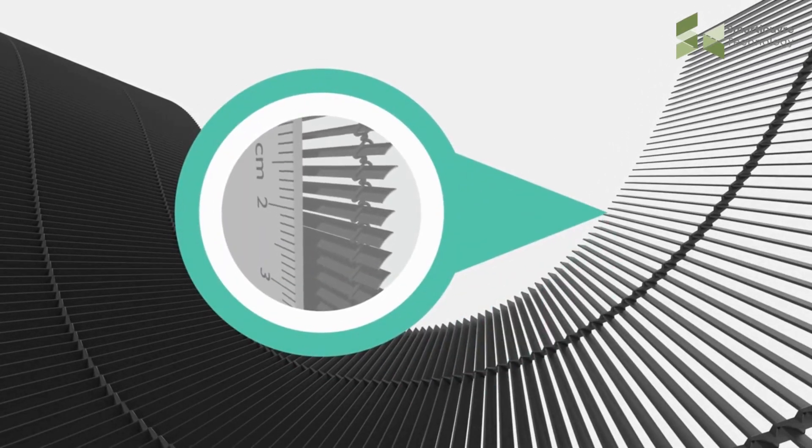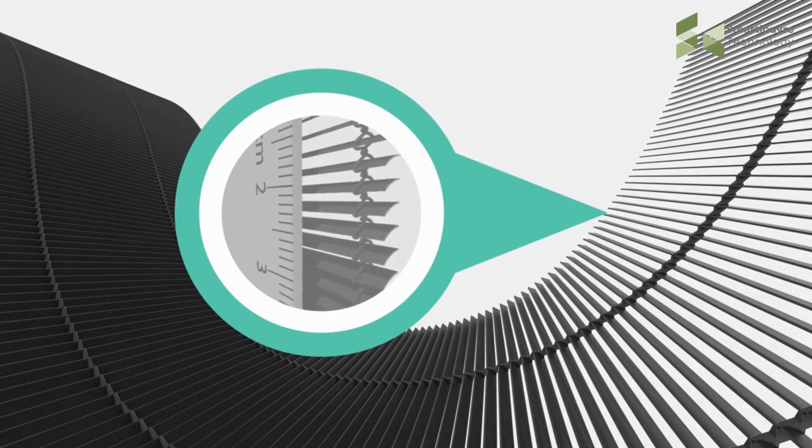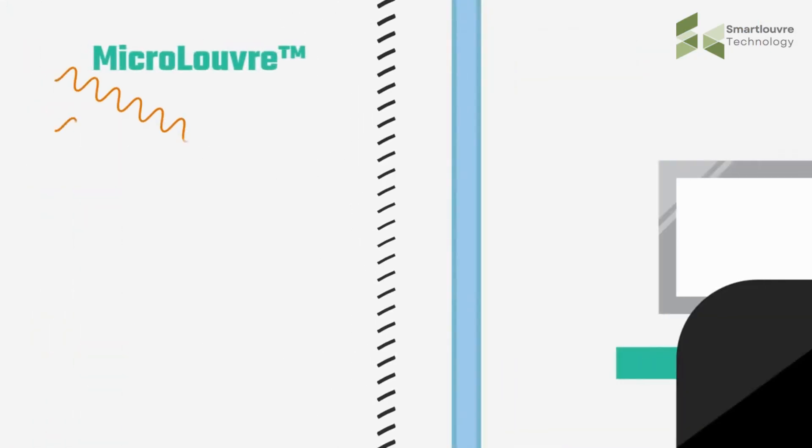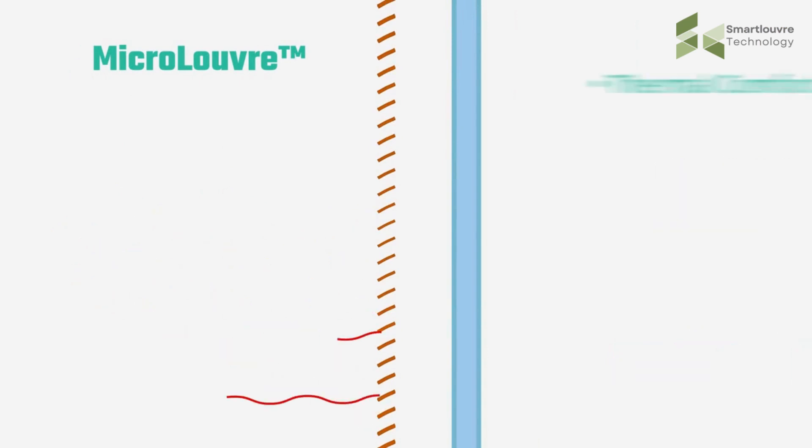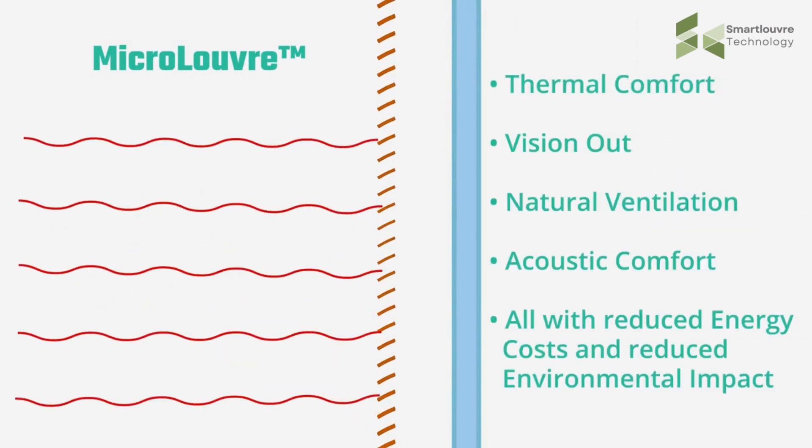It acts like a sponge, soaking up and dispersing the heat to the outside atmosphere before it can even reach the glass. Micro Louver has over 700 paper-thin bronze louvers in every meter.